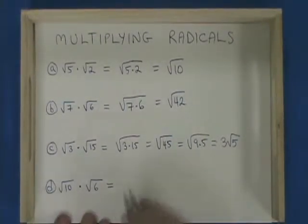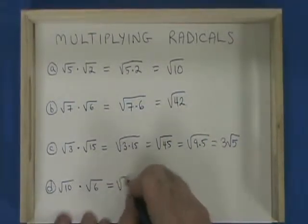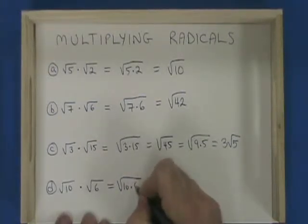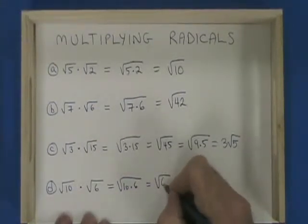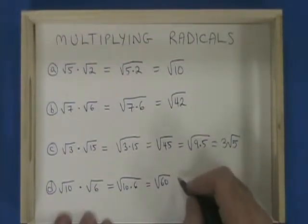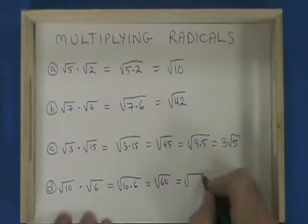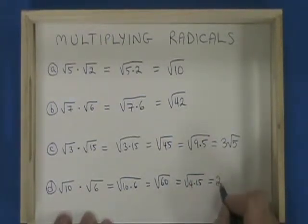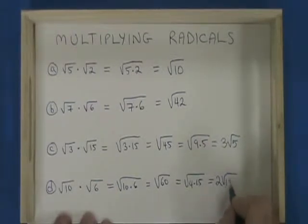Root 10 times root 6 is equal to the square root of 10 times 6, which is the square root of 60. 60 also has a factor which is a perfect square, which is 4. So we break it into 4 times 15. The square root of 4 comes outside — that's the 2 — and the 15 is trapped on the inside.